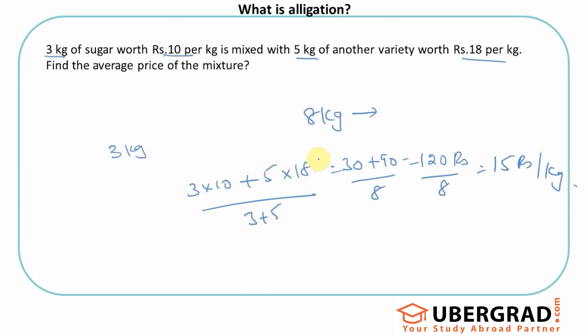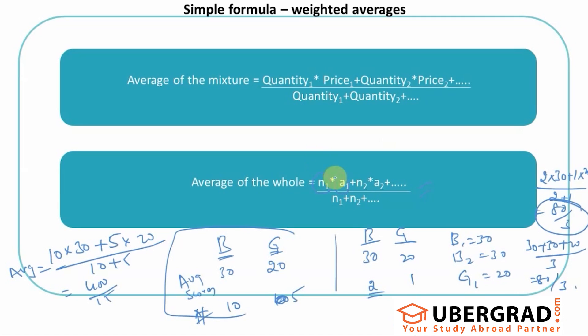Which is what this formula is also, right? 3 kgs into 10 rupees plus 5 kgs into 18 rupees, divided by 3 plus 5 kg, which is something similar to what I've written here. So this formula can be extended to the specific case we've discussed, the quantity of sugar and the price. So quantity one into price one plus quantity two into price two.